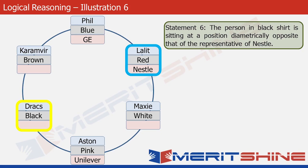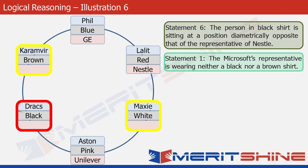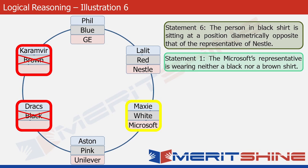Next we use statement one, which states that Microsoft's representative is wearing neither a black nor a brown shirt. There are three places in the structure where Microsoft can be placed. The black-shirt position is ruled out, and the brown-shirt position is also ruled out. So Microsoft goes to the third box — and this person is Maxi.